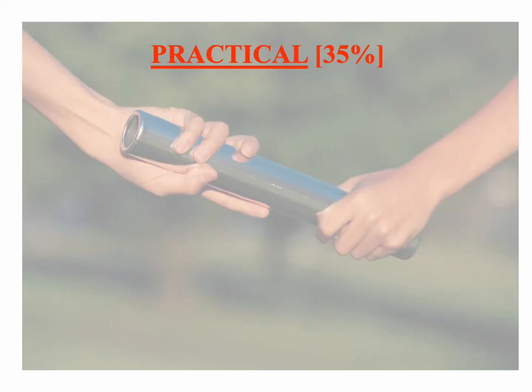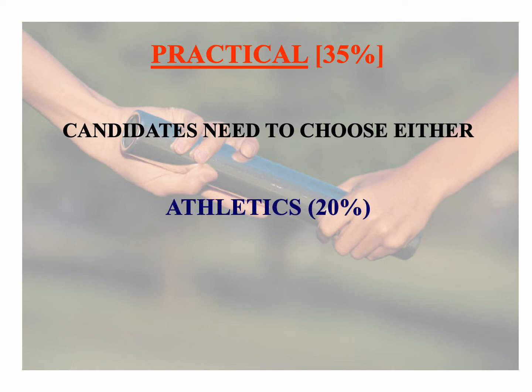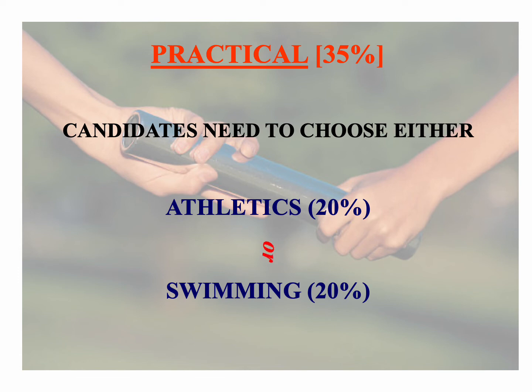The other 20% devoted to the practical component are either for athletics or swimming. Students need to choose one of these areas. It is important to remember that the school will need to decide which area to cover and teach during the lessons. The decision depends on the available facilities.